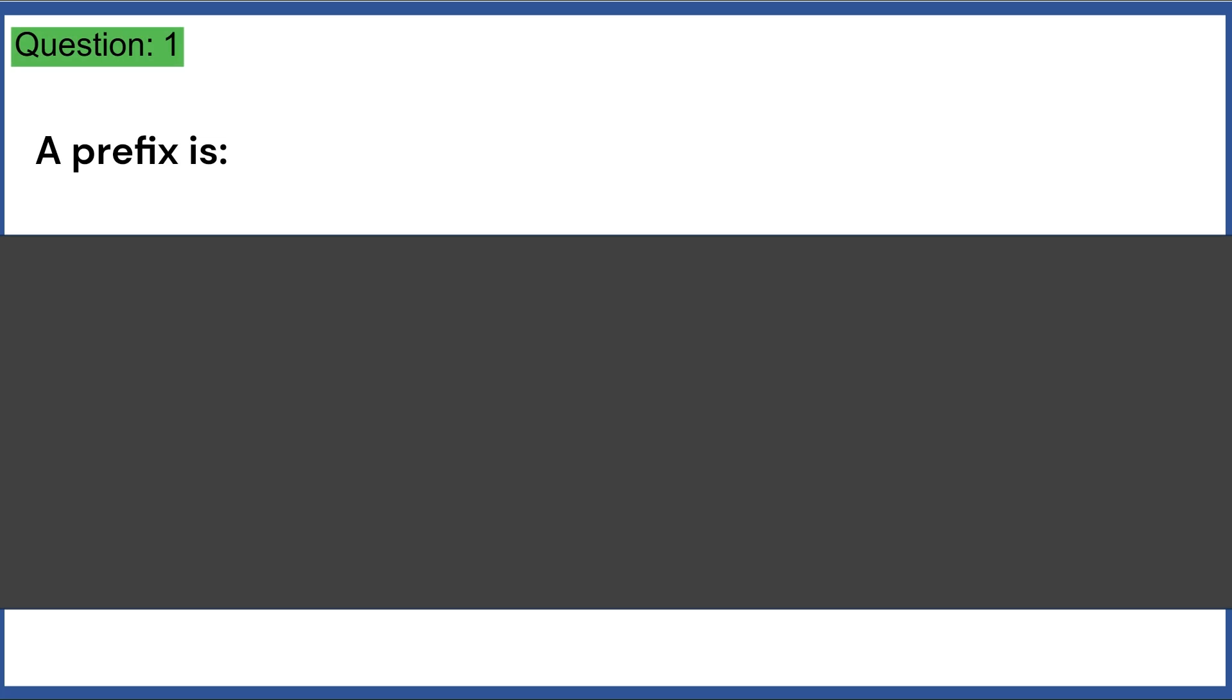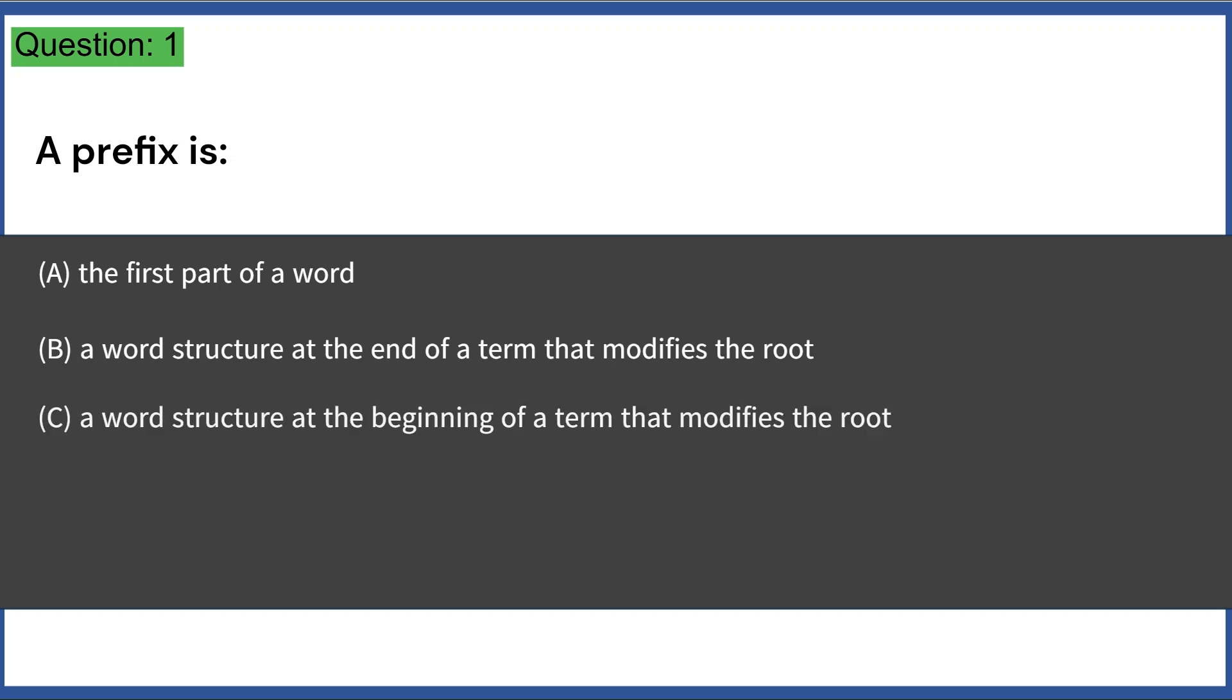A prefix is: a. The first part of a word. b. A word structure at the end of a term that modifies the root. c. A word structure at the beginning of a term that modifies the root. d. A combining vowel that gets the word to its meaning. e. None of the above. Answer, C.